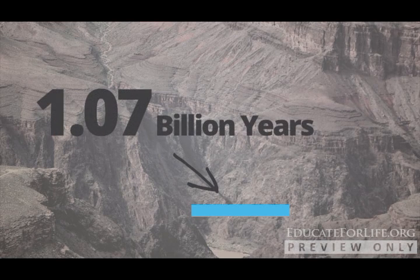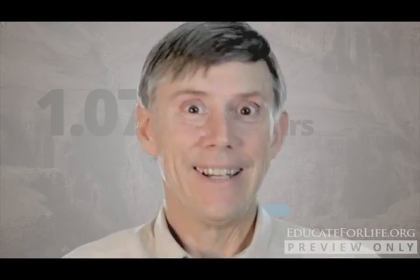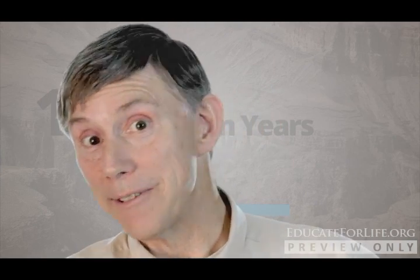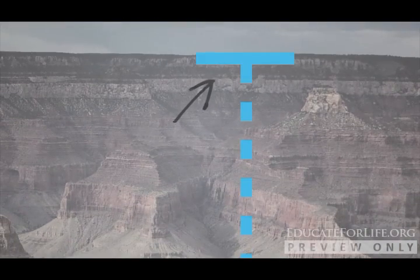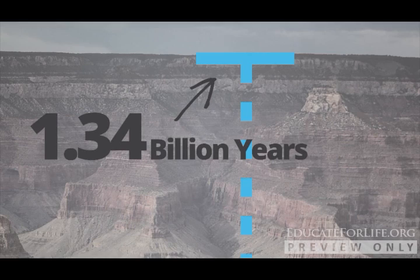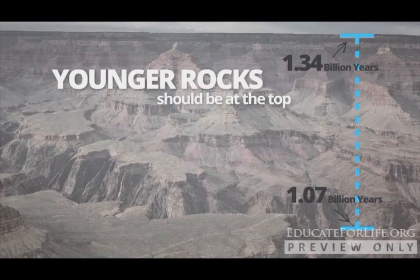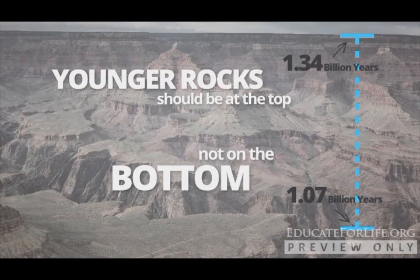In this third example, let's apply the same dating technique to two completely different rock bodies. One at the bottom of Grand Canyon — the Cardenas Basalt — has a rubidium-strontium isochron date of 1.07 billion years. There's another rock body way up on top of Grand Canyon dated at 1.34 billion years. Obviously, the rock on the top can't be older than the one on the bottom. Any geologist can see these numbers are nonsense. Something is desperately wrong with these methods.